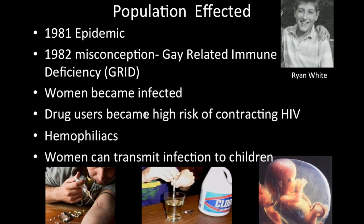Drug users who injected heroin also became high-risk, as sharing needles would transmit blood — and the virus — from one person to another. Also at high risk were hemophiliacs, because at the time there was no screening of donated blood. An HIV-positive individual could easily transmit the infection to another human receiving a blood donation.